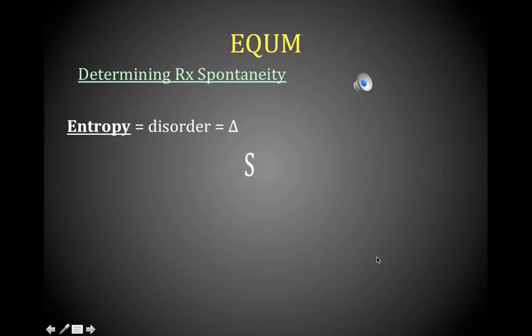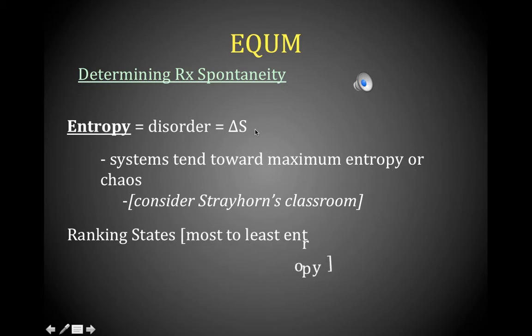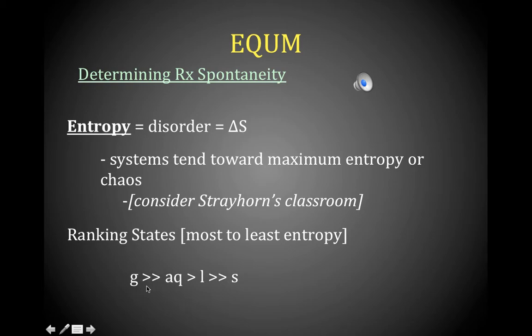Now we look at entropy — delta S, change in disorder — one of my favorite things. Systems tend towards maximum entropy or disorder. Gases are way, way more disordered than aqueous solutions; aqueous is slightly more chaotic than liquid; and liquids are way more disorganized than solids. Solids are highly organized — everything is in a rigid arrangement and can only vibrate.